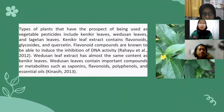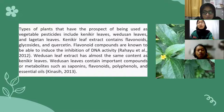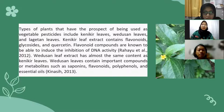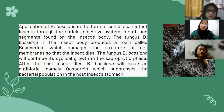Types of plants that have the prospect of being used as vegetal pesticides include knicker leaves, producing leaves, and lantana leaves. Knicker leaf extract contains flavonoids, glycosides, and quercetin. Flavonoid compounds are known to be able to induce the inhibition of DNA activity (Rahayu et al., 2012). Wodoson leaf extract has almost the same content as knicker leaves, containing important secondary metabolites such as saponins, flavonoids, polyphenols, and essential oils (Kinaseh, 2013).